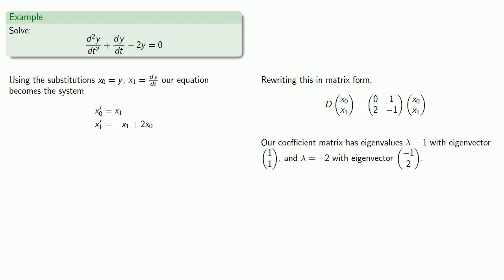Our coefficient matrix has eigenvalues lambda equals 1 with eigenvector (1, 1), and lambda equals negative 2 with eigenvector (-1, 2). And so we get our general solution. Remember, x0 equals y. Since x0 equals y, this gives us the solution y equals the first components, where we've absorbed the constant into c2.